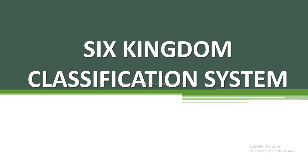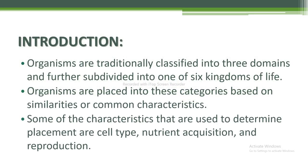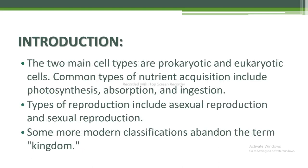Let's start the video. First of all, I will discuss the introduction. Organisms are traditionally classified into three domains and further subdivided into one of six kingdoms of life. Organisms are placed into these categories based on similarities or common characteristics. Some of the characteristics used to determine placement are cell type, nutrient acquisition, and reproduction. The two main cell types are prokaryotic and eukaryotic cells. Common types of nutrient acquisition include photosynthesis, absorption, and ingestion.